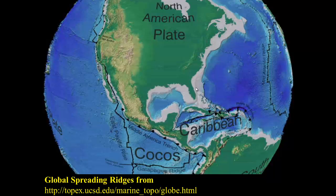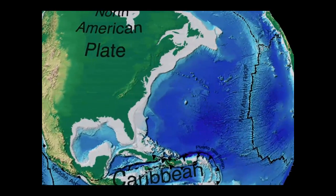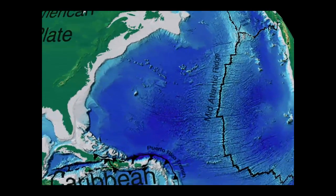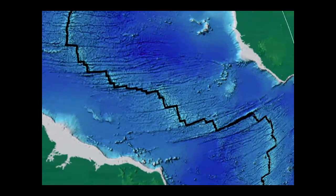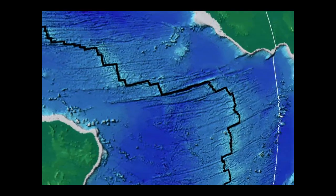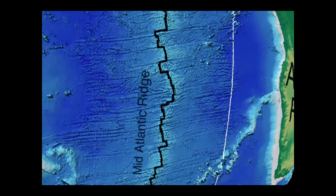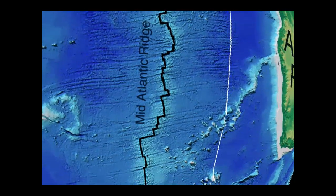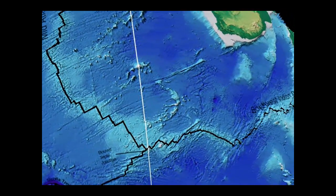A lot of normal faulting occurs at mid-ocean ridges. This view of global topography and bathymetry takes us on a tour of mid-ocean ridges. Here's the mid-Atlantic, which clearly is a zone of extension as Africa is pulled apart from South America. There's active extension at that ridge driving volcanism, and material flows up from the upper mantle to make new oceanic crust.